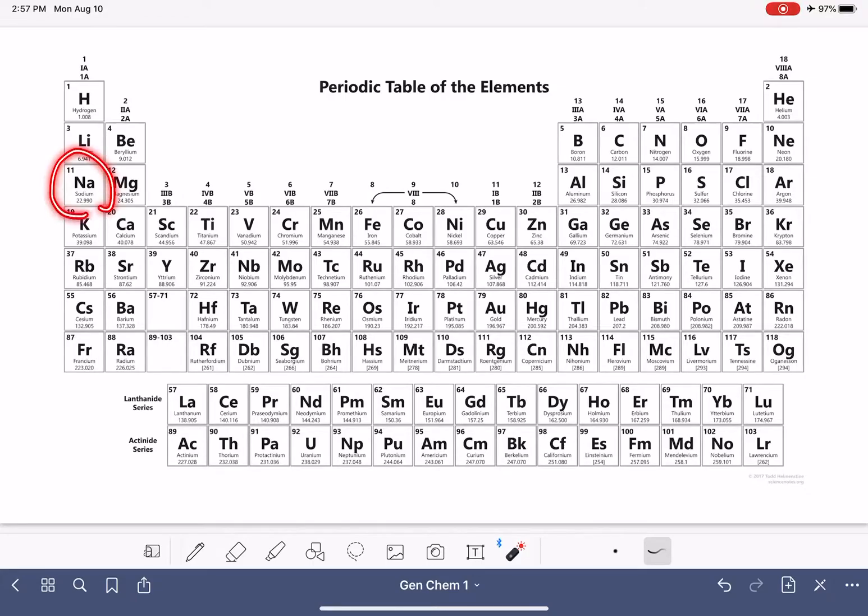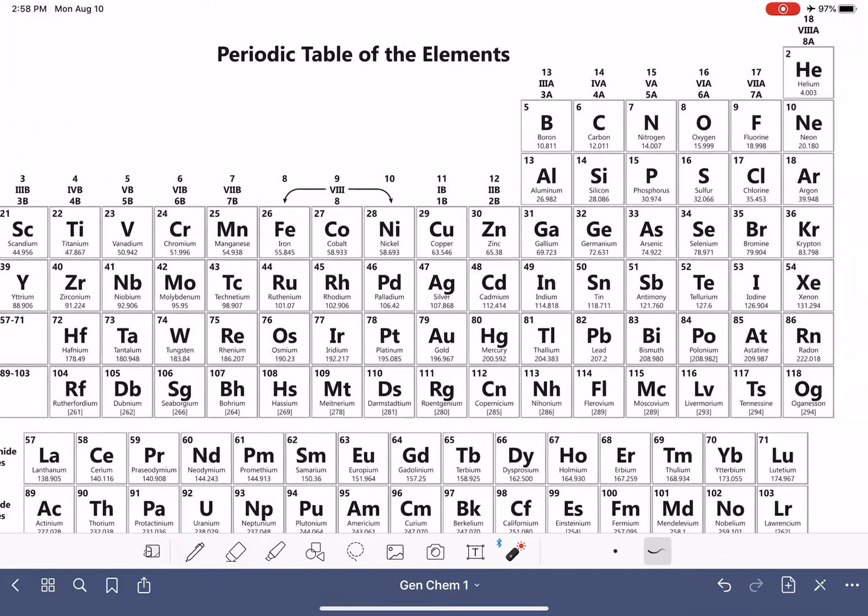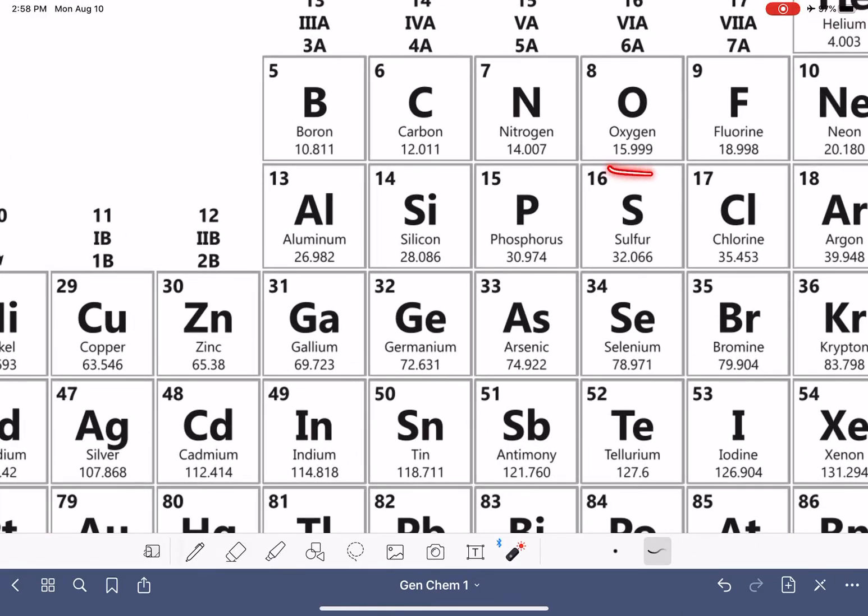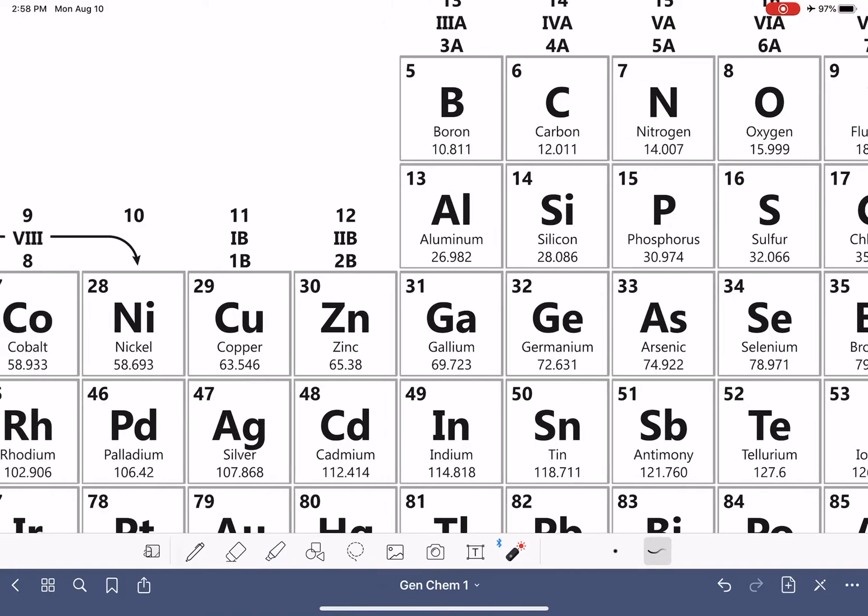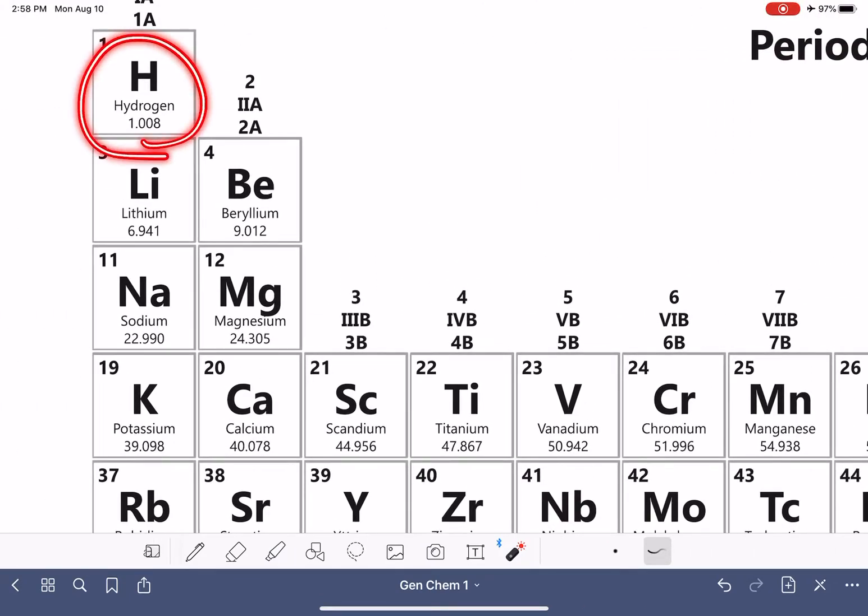Sodium is right here. And the number that we're looking for is the AMU or the atomic weight or atomic mass. So sodium is 22.99. Oxygen over here, 15.999. And hydrogen, 1.008.